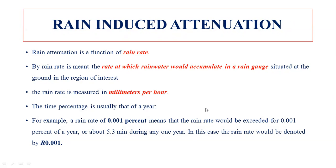Rain is measured in millimeters per hour, and that is how we measure rain rate. For finding this attenuation, the time percentage is used. For example, a rain rate of 0.001% means that the rain would be exceeded for 0.001 percent of the year, or 5.3 minutes during any one year.